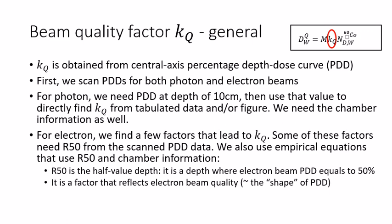For electron beam, we find a few factors that multiply together to equal KQ. Some of these factors need R50 value from the scanned PDD data. We will use empirical equations again that use the R50 and the chamber information to calculate those factors that eventually lead to KQ.